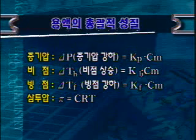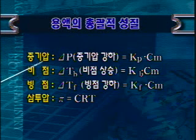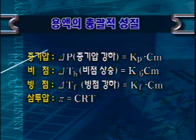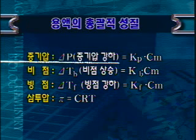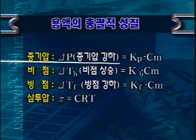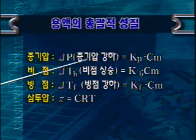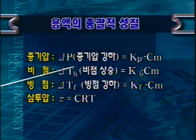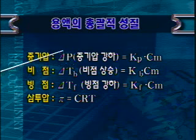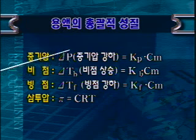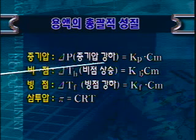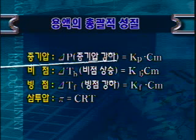용액의 공통적 특성을 총괄적 성질이라고 합니다. 이는 증기압, 비점, 빙점, 삼투압이며, 용질의 종류에 관계없이 용질의 농도에 의해서 변화합니다. 증기압이라는 것은 용매가 얼마나 잘 증발할 수 있는가를 나타내는 지표입니다. 증기압 강하(ΔP)는, 용질이 많이 용해되어 있을수록 용질이 용매 간의 결합을 강화시켜 증발하기 어렵기 때문에 용질의 농도가 높을수록 더 크게 됩니다.